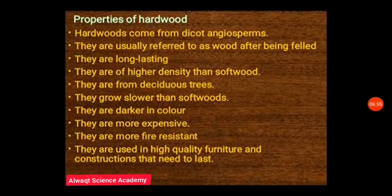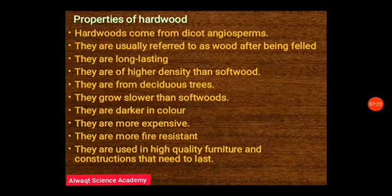Hardwood comes from dicot angiosperms. Angiosperms are flowering and seed-producing trees or plants. All trees that are flowering plants producing flowers and fruits, and are dicot angiosperms, are sources of hardwood. Trees like coconut and palm trees, which are monocots, do not qualify. All dicot angiosperms are sources of hardwood. Once a dicot angiosperm has been felled or cut down, it is referred to as wood.